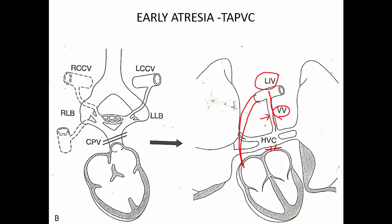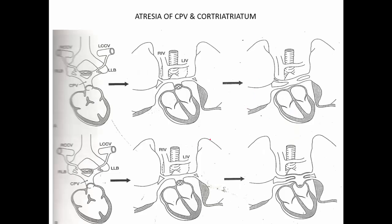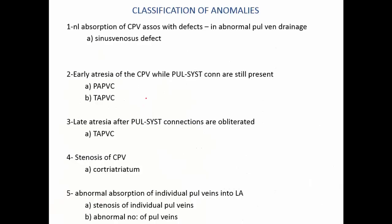It will drain into the right atria — giving rise to what we call supracardiac TAPVC. The third scenario is where there is a severe obstruction or narrowing at the entry into the left atria, so the common chamber dilates and looks like a third atria. This condition is called cor triatriatum, where you have your right atria, your left atria, and this chamber which looks like a third atria.